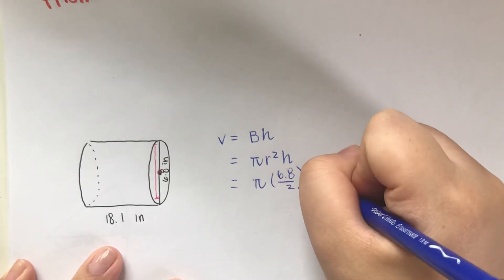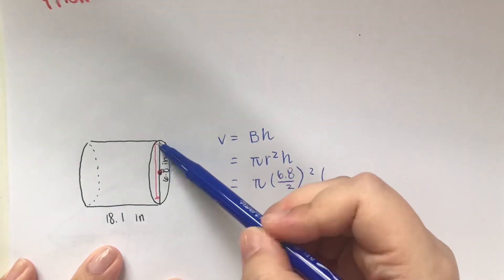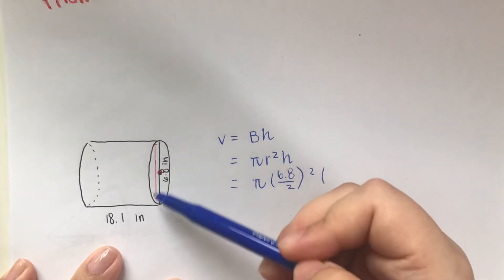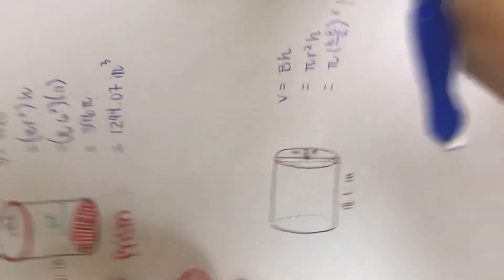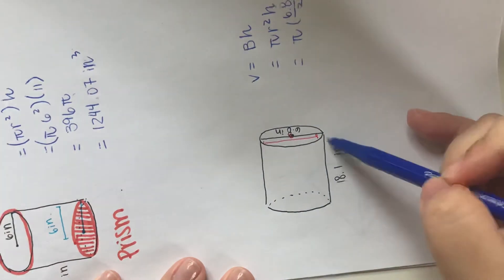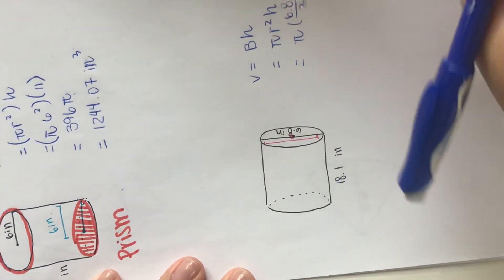h is the height, right? So some people think that, oh Ms. N, isn't this the height? No, this is the base. That's why we need to rotate it in the beginning to see that 18.1 is actually the height. So multiply by 18.1.